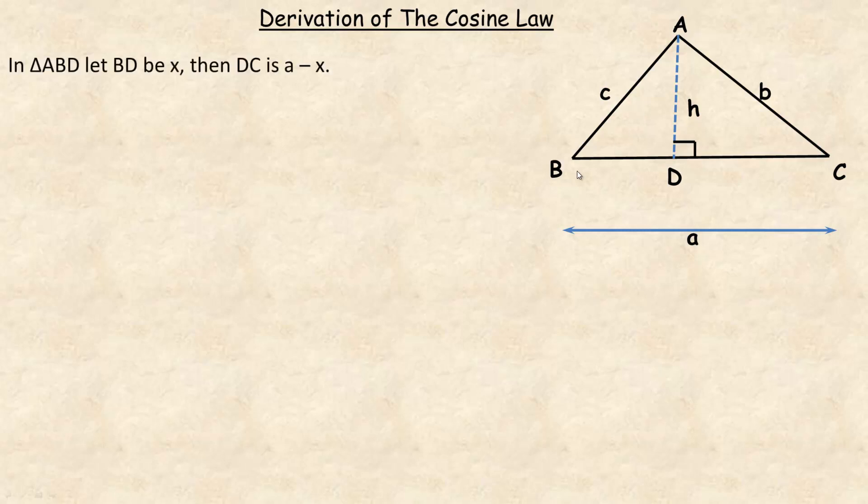So in the triangle, I made this construction here, perpendicular from angle A down to the BC side. And so that's perpendicular, we're going to call that H, and then this is the point D.